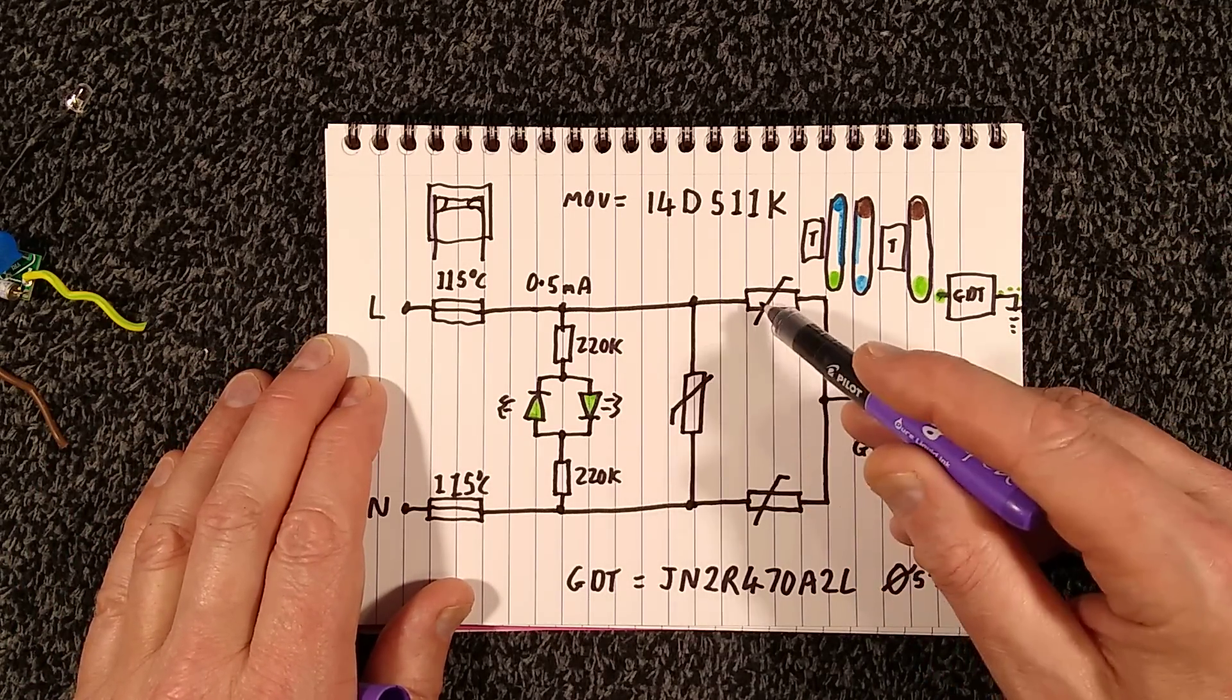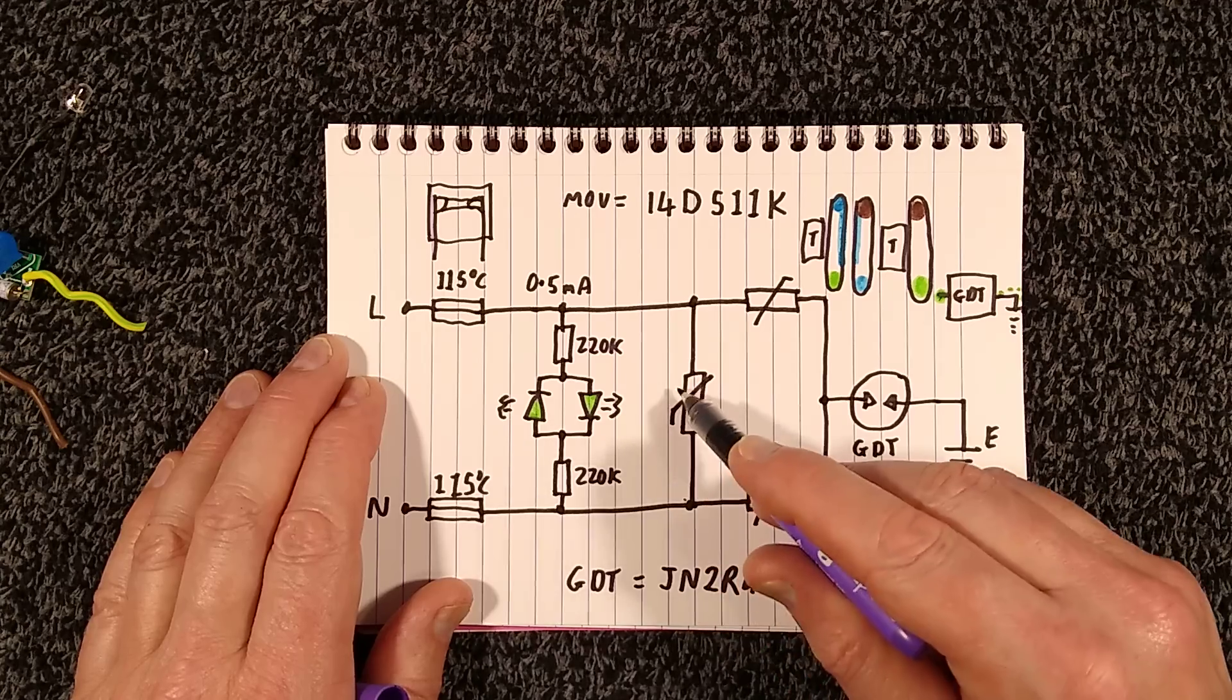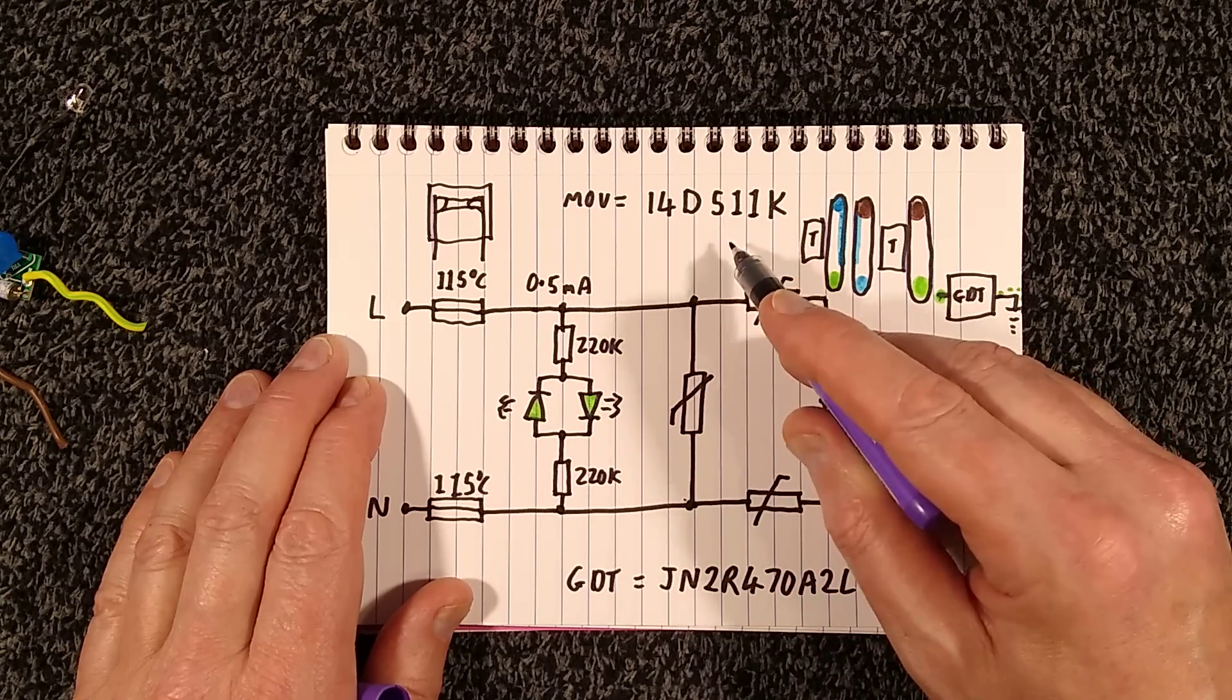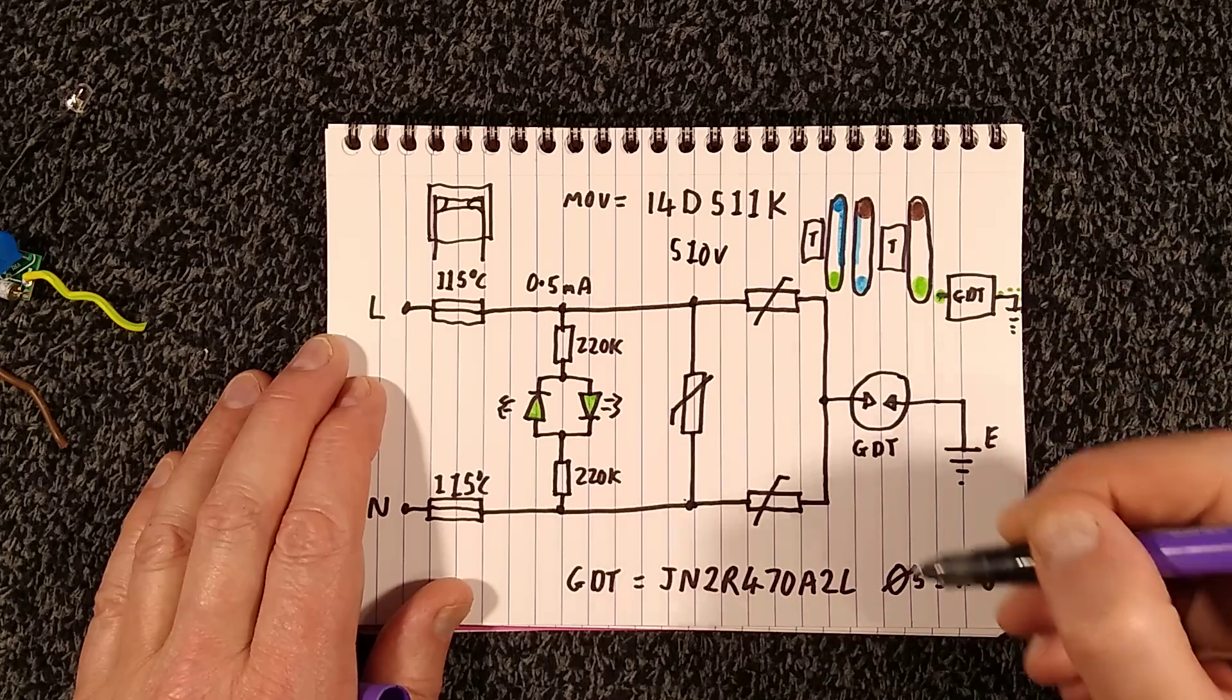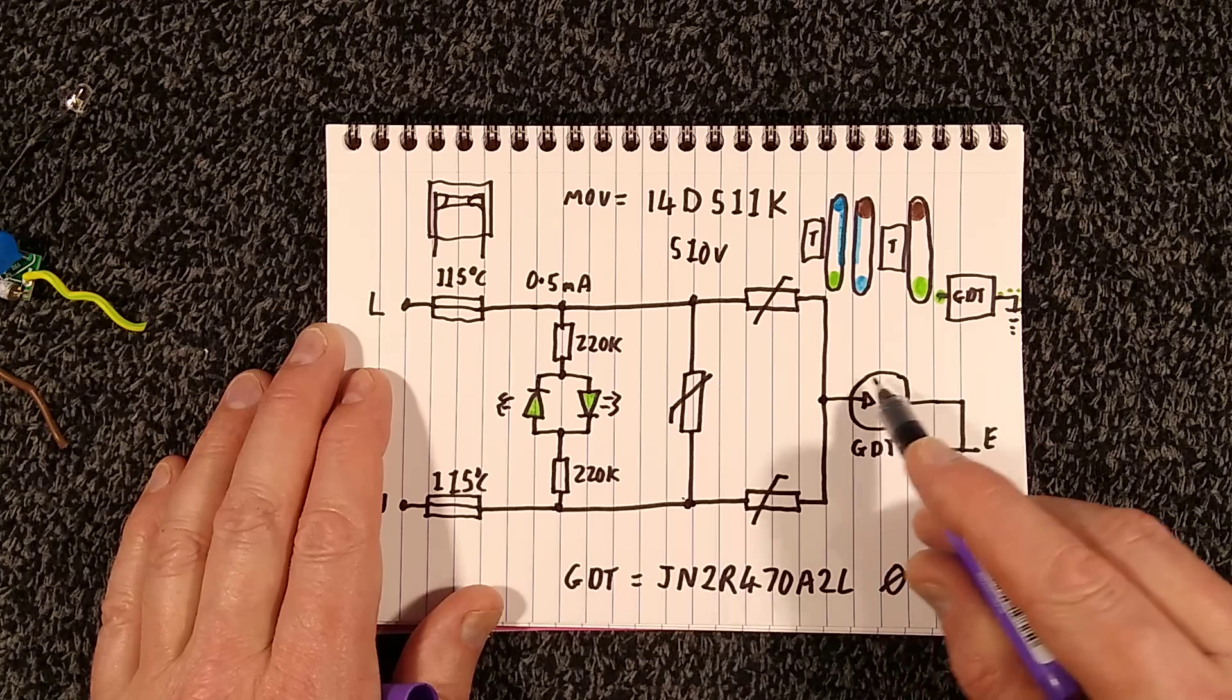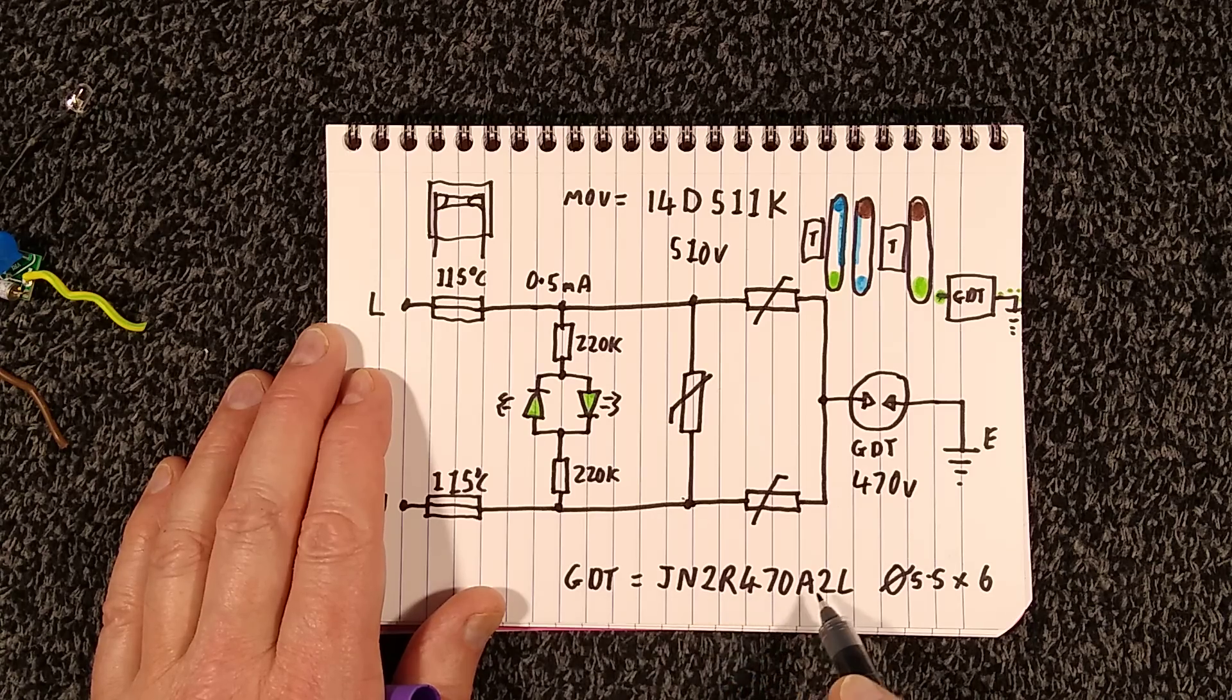So the other two metal oxide varistors are between, the main one is between live and neutral. The other two are between live and earth and neutral and earth, but there's also that gas discharge tube now. These metal oxide varistors, normally in the UK, they're labelled as say 14D471, which means 14mm diameter, D for disk, and this is the voltage. So 511 actually means 510 volts, which is quite high. It's normally 470 volts. They maybe just want to make it last longer, give the other surge suppression equipment a chance to act first. But after that, we've got this gas discharge tube on the earth, which means it's going to add another 470 volts. That is a GN2R 470, 470 volts, series A2L. And the A2L indicates the series in size, which is 5.5mm diameter by 6mm wide.